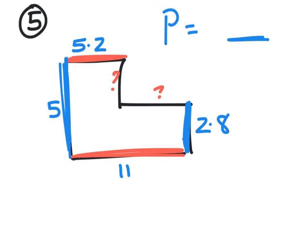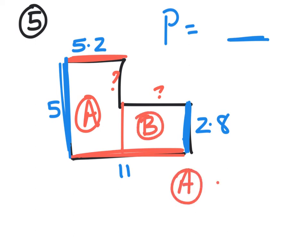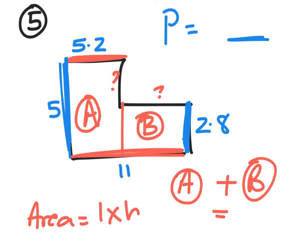To work out the area, we're going to split the shape up into two rectangles, call them A and B. Work out rectangle A, work out rectangle B, and add them together. Remember, the area of a rectangle is length times breadth.